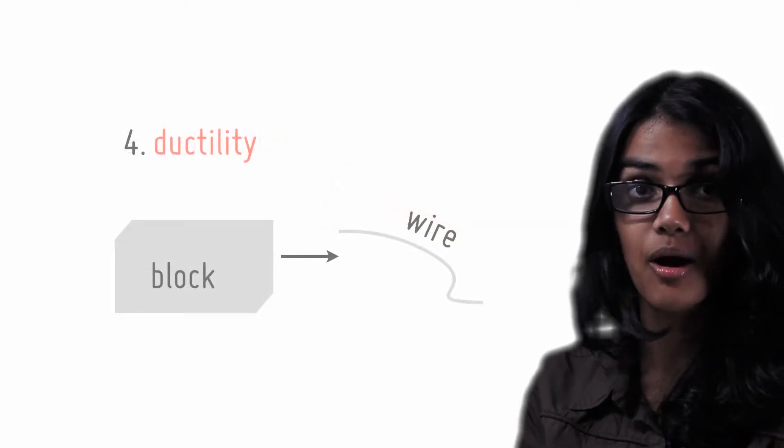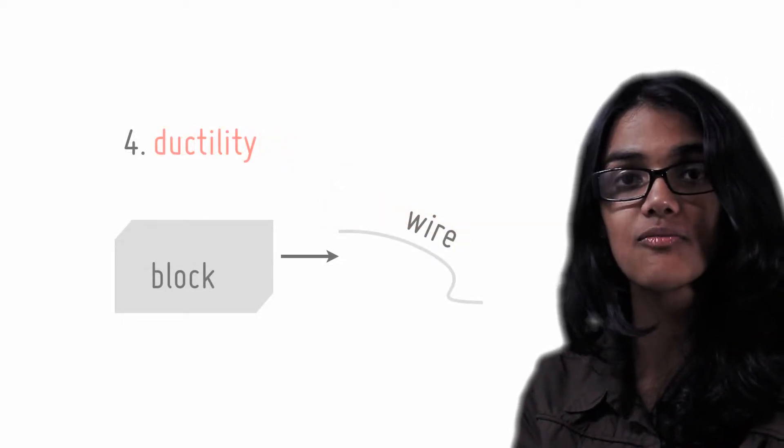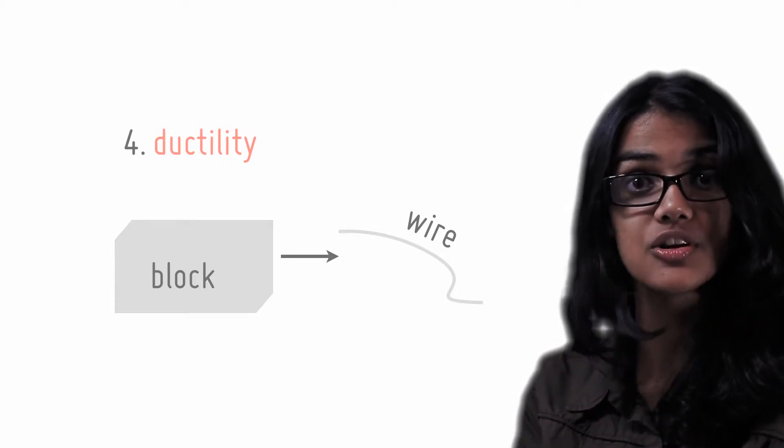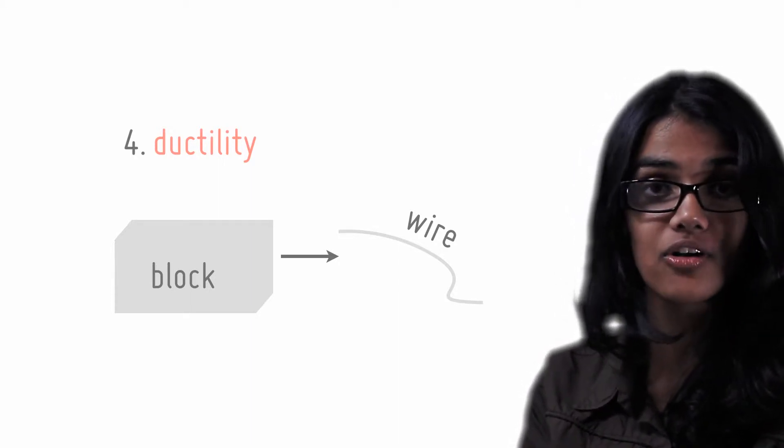The last metallic property is ductility, or the ability of metals to be drawn into thin wires. This is also important as wires are everywhere and an integral part of our lives.